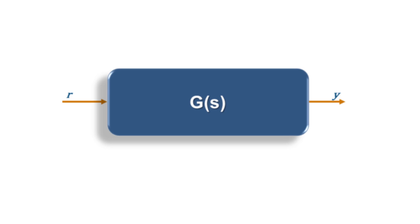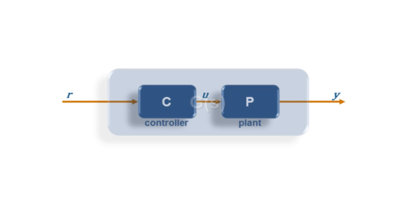In its most basic form, a control system will contain two main parts: a plant, which represents the dynamics of the thing we're trying to control, and a controller.